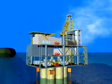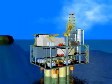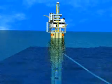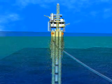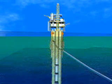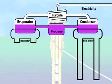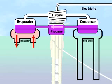OTEC uses this continuously renewing energy to generate electricity without oil, coal, natural gas, or any other fuel. OTEC only needs the temperature difference between the hot surface water and cold deep water of the ocean. Ocean Thermal Electric Conversion takes the hot surface water and uses it to boil another liquid, like propane, which has a very low boiling point.